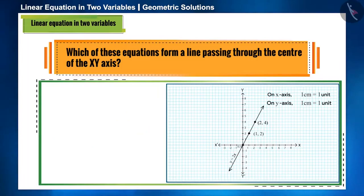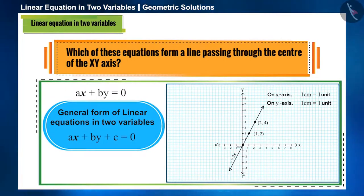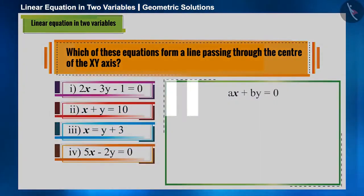As we discussed in our previous video, the line that passes through the center of the x-y axis will be ax plus by is equal to 0. And if we compare it with the general form, c is 0 here. You can pause the video and compare the given options with the equation and see which option is the correct answer to this question.